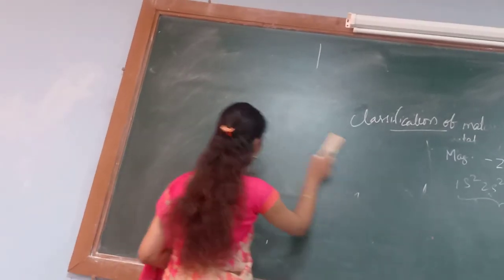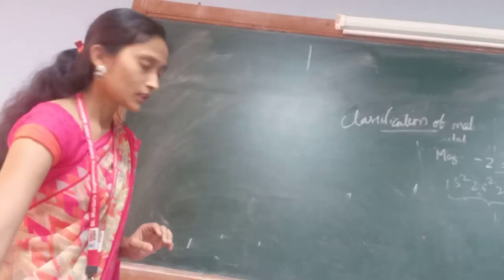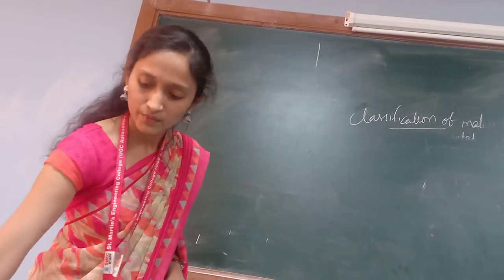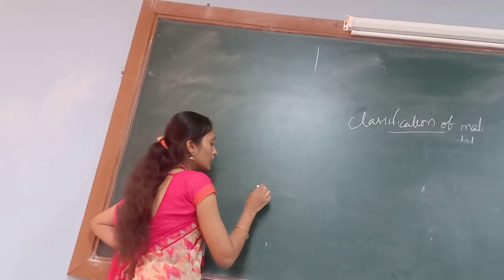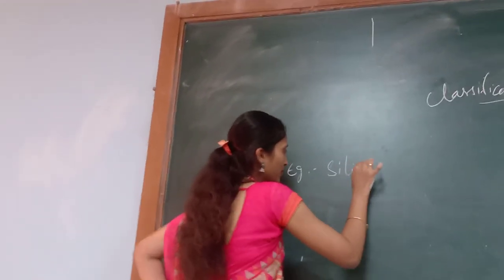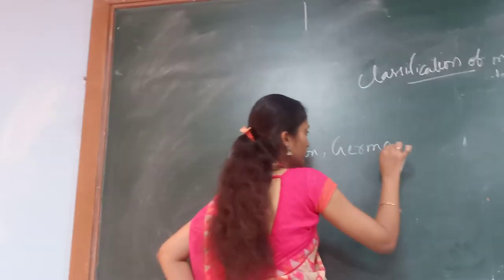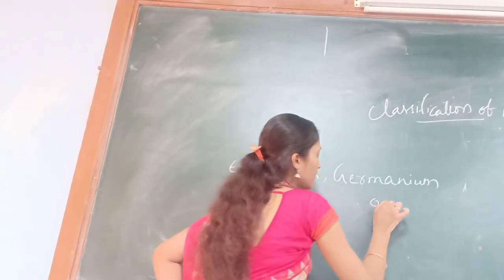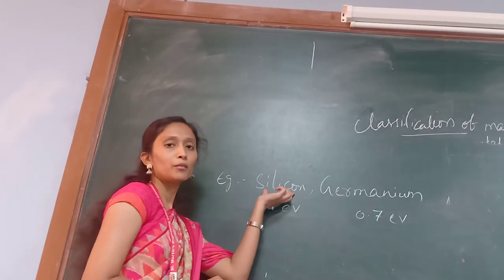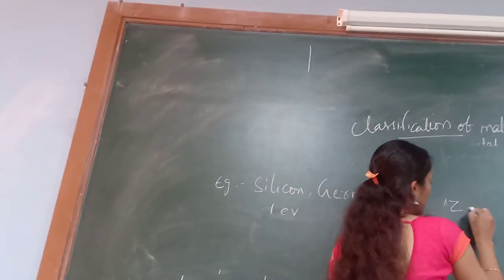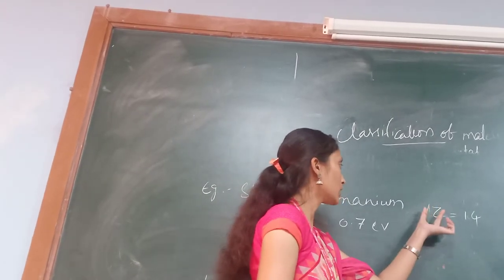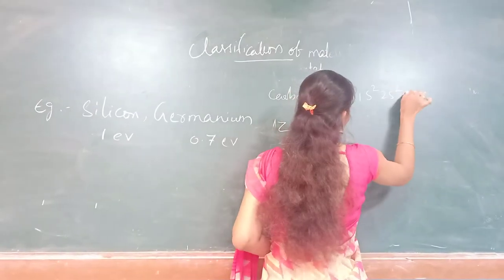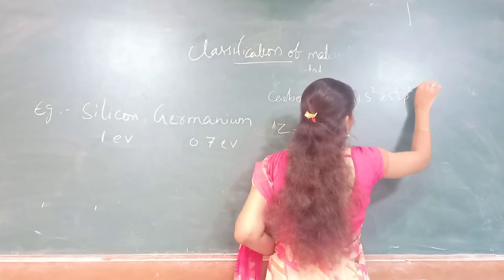Now, before going to semiconductors: semiconductors means partially conducted. Examples are silicon and germanium. These are having an energy gap of 1 electron volt for silicon and 0.7 electron volt for germanium. Above silicon in the periodic table there is carbon, having atomic number 6. Its configuration is 1s², 2s², 2p — with 4 states empty.